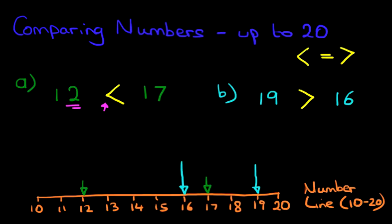Remember, always double check. Is the arrow pointing to the smaller number? Well, it's pointing at 16. And 16 comes first on our number line. So that is correct. 19 is greater than 16.